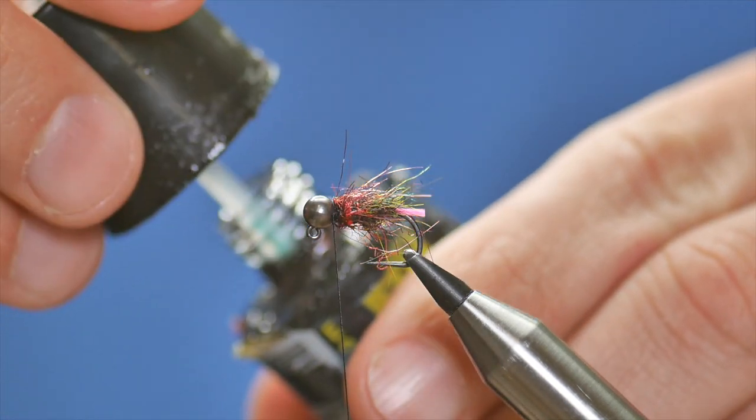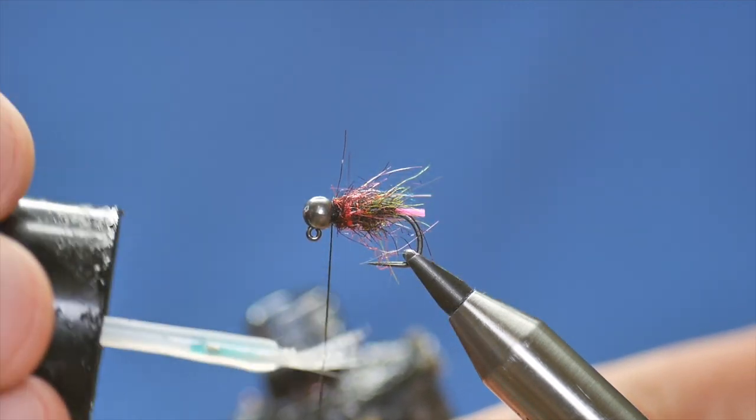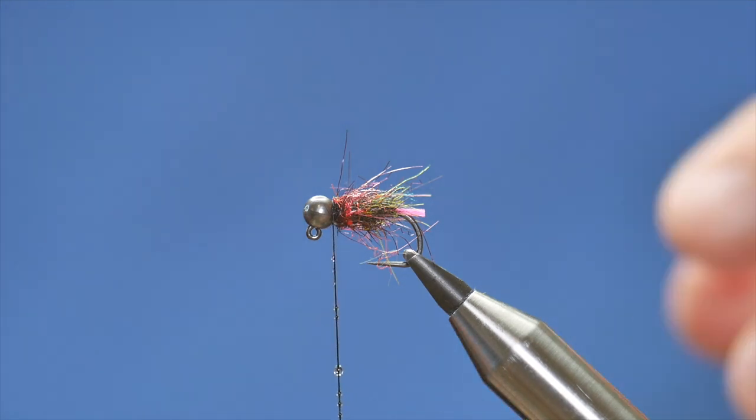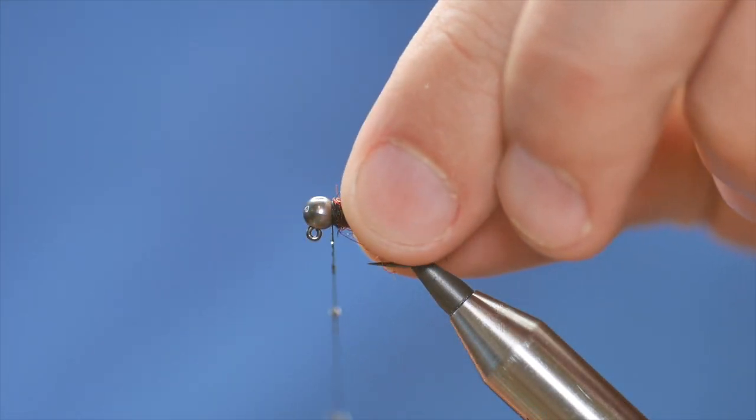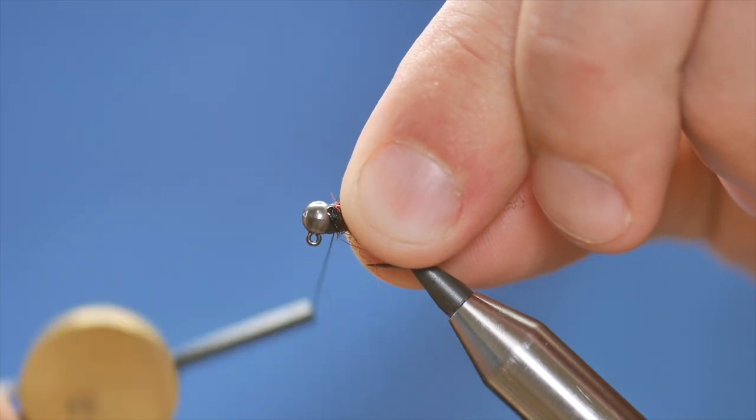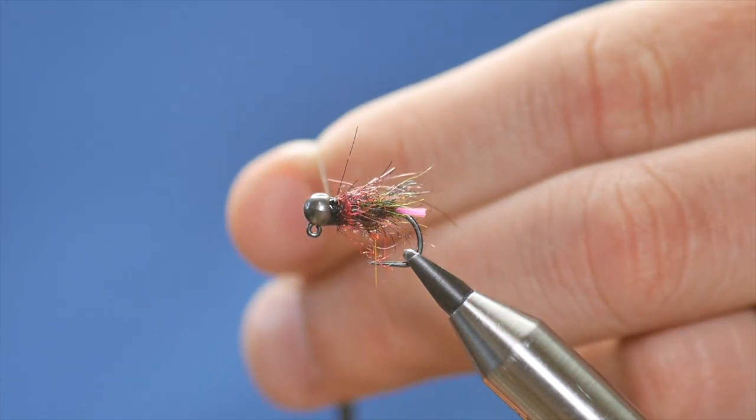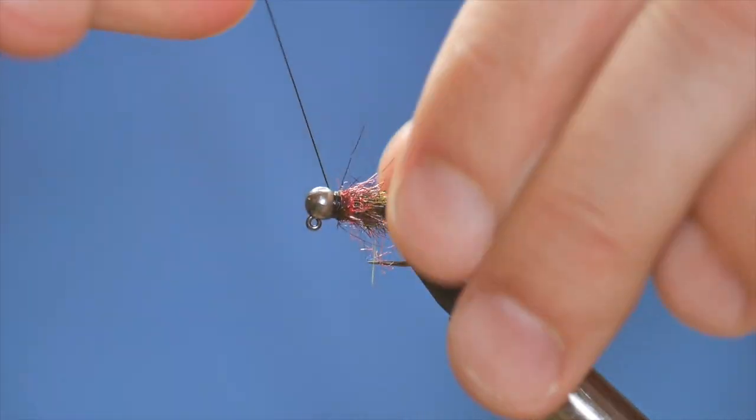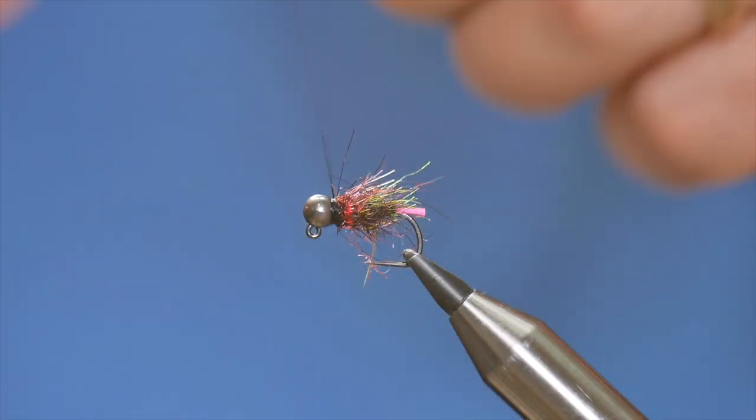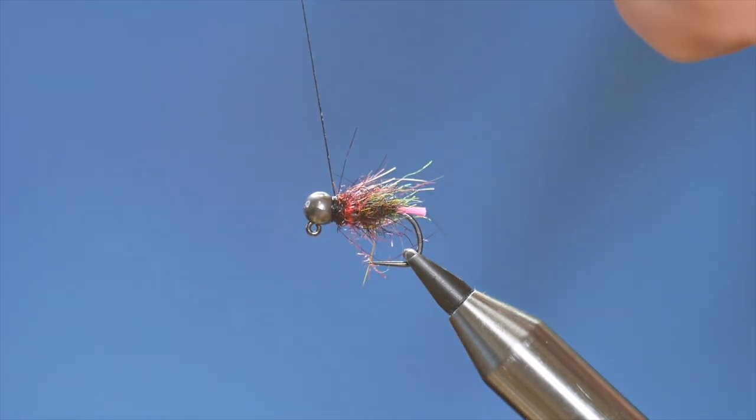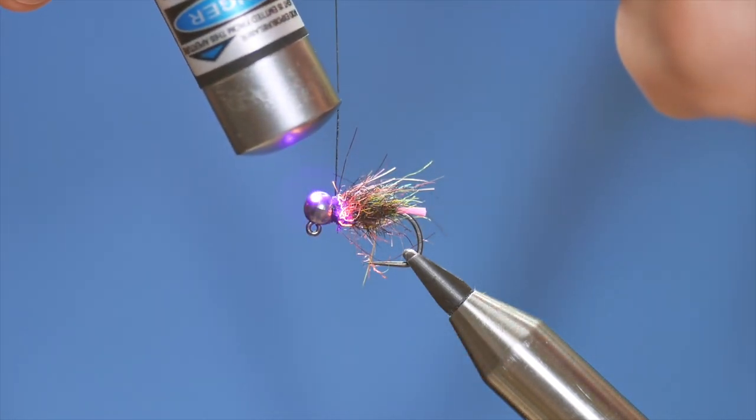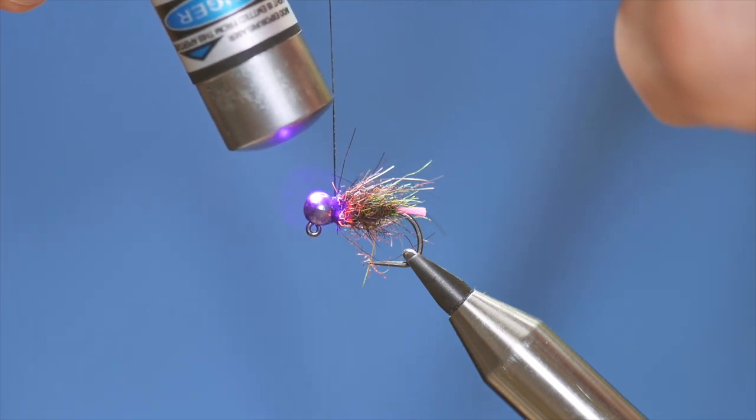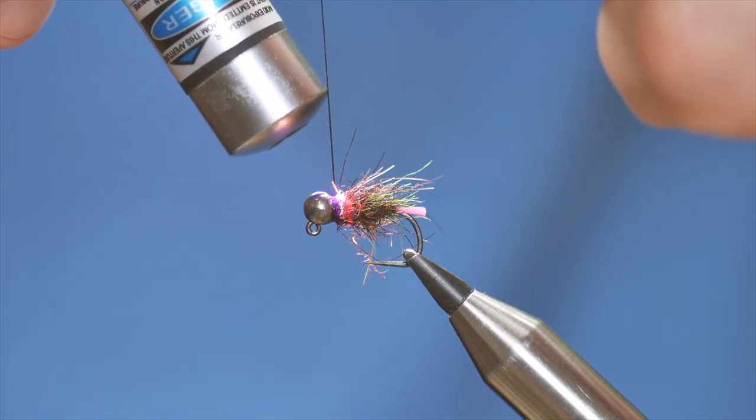I'm going to finish that off in my usual manner. Now, if you were of a mind to, you could change your thread here and have a nice hot collar. But, I've already got quite a lot of hot striking points going on with this fly. I've got my tail, which has got a fluorescent effect. And I've also got this hot orange bead underneath my collar here.